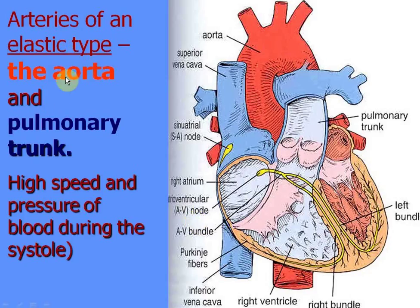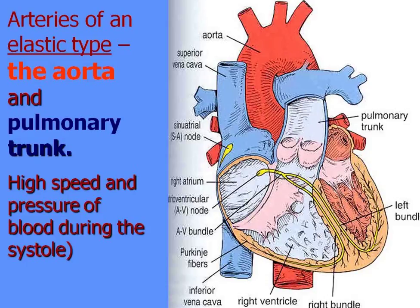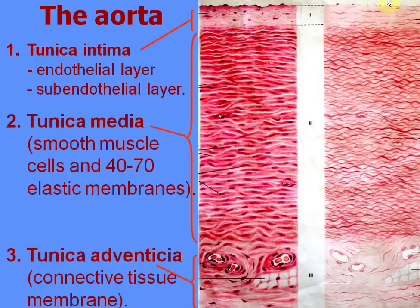Arteries of elastic type include the aorta and pulmonary trunk. During systole there is high speed and pressure of blood, so these arteries should be strong and elastic. During systole they enlarge, and during diastole return to the initial state — so they pulse rhythmically, pushing the blood. The aorta consists of membranes: tunica intima, tunica media, and tunica adventitia.